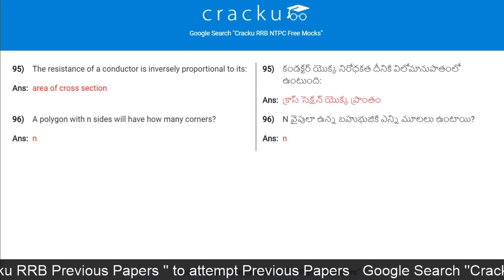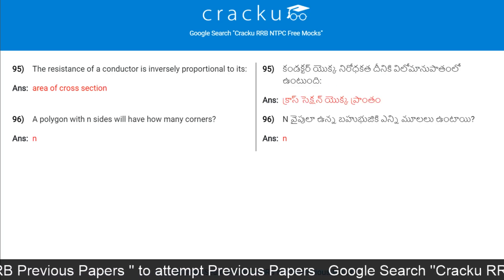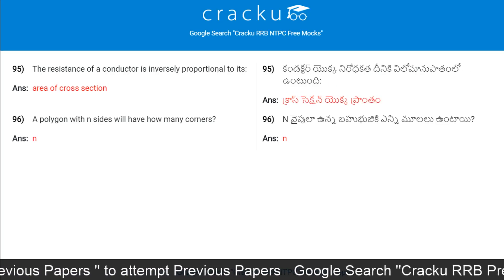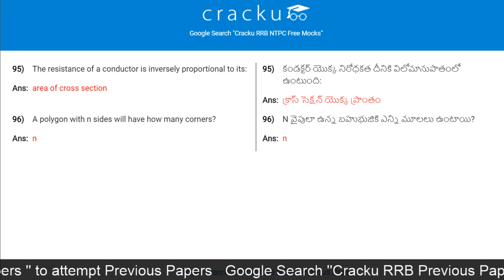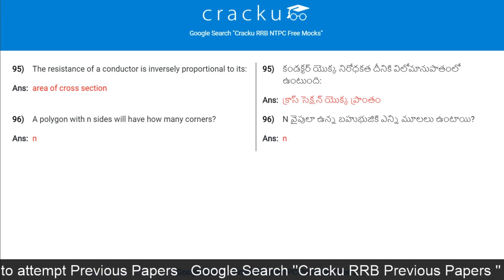The resistance of a conductor is inversely proportional to its area of cross-section.